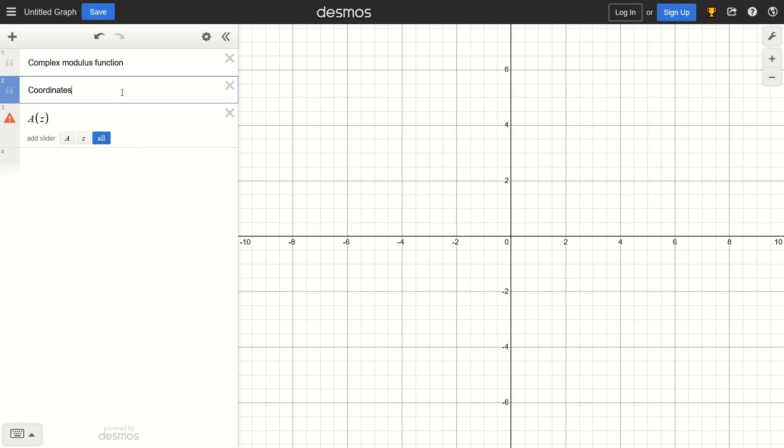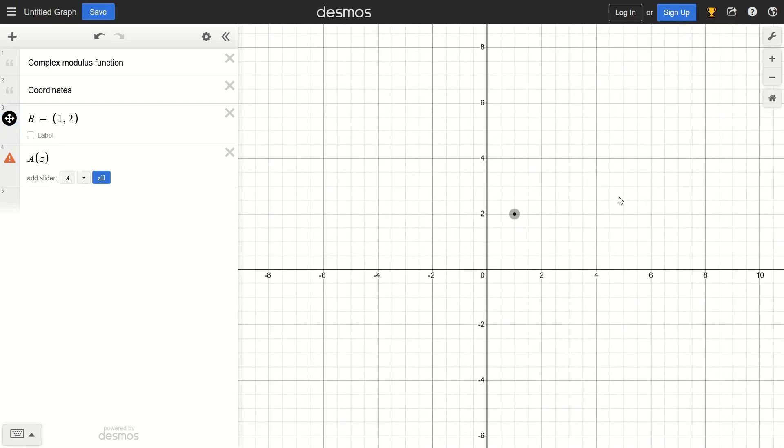Because in Desmos you can define a coordinate, let's say a point B, and set this equal to a tuple, let's say 1, 2, and we're going to have a point over here on the screen.